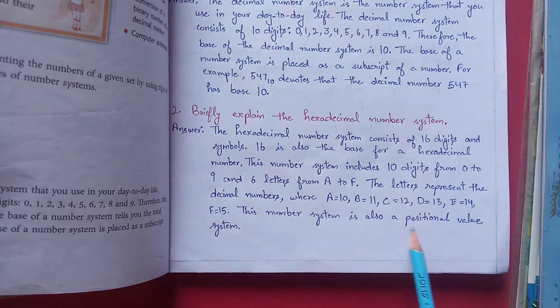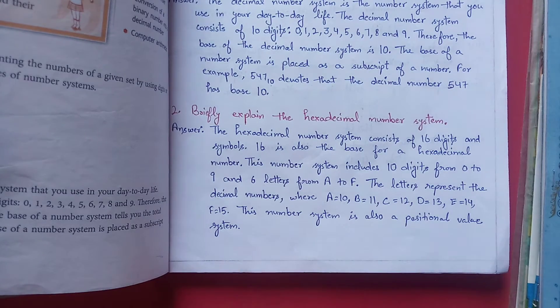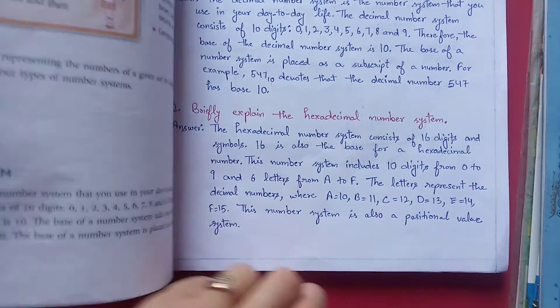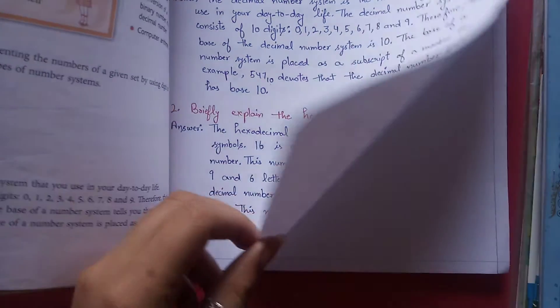The number system is also a positional value system. Positional value system ki wajah se decide hota hai ki kitne power pe base ko raise karna hai. And positional value system starts from right, units number.